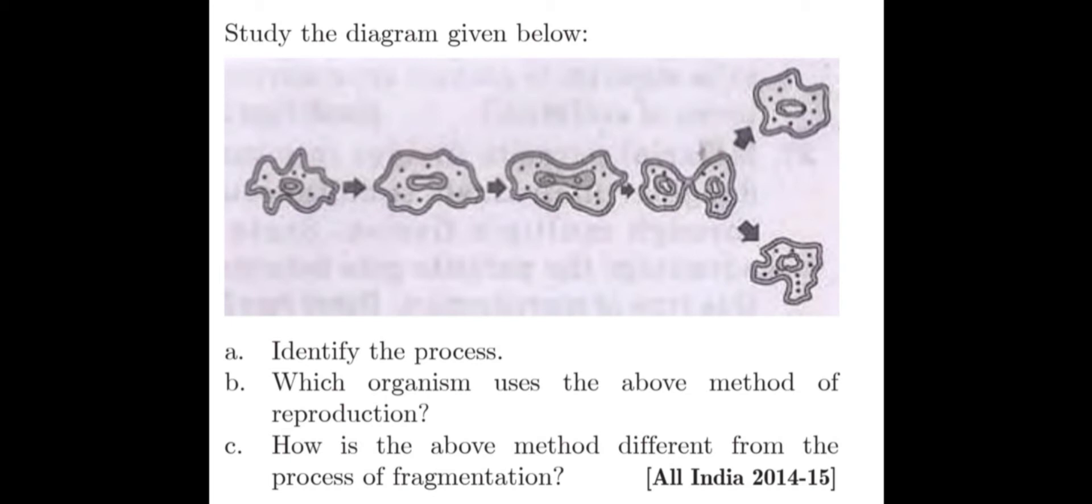Question number four. Study the diagram given below. Observe the diagram carefully. There are three questions related to this diagram. First one, identify the process. Second, which organism uses the above method of reproduction? Third one, how is the above method different from the process of fragmentation? Answer to each question separately.